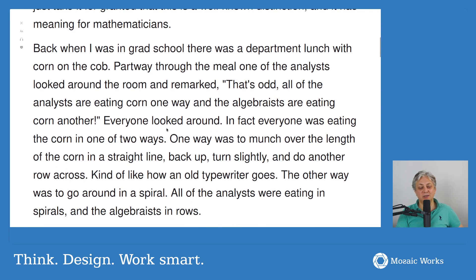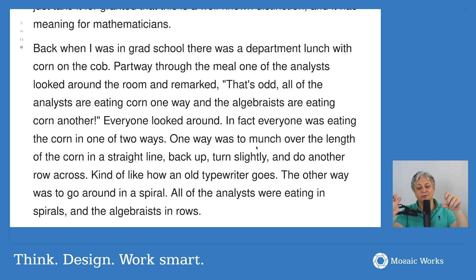The article goes into an interesting story about grad school: there was a department lunch with corn on the cob. Partway through the meal, one of the analysts looked around and remarked, 'That's odd — all the analysts are eating corn one way and the algebraists another.' Everyone looked around, and in fact everyone was eating in one of two ways. One way was to munch along the length in a straight line, back up, turn slightly, and do another row — so row, turn, row, turn, row.